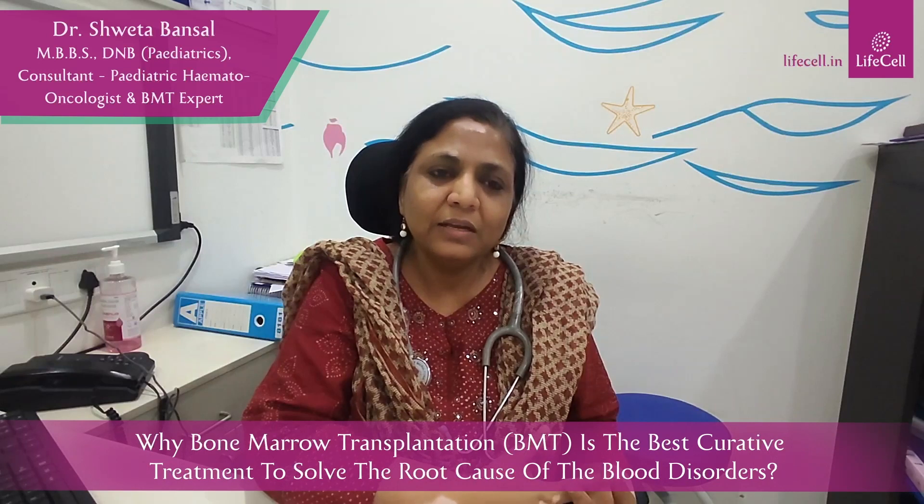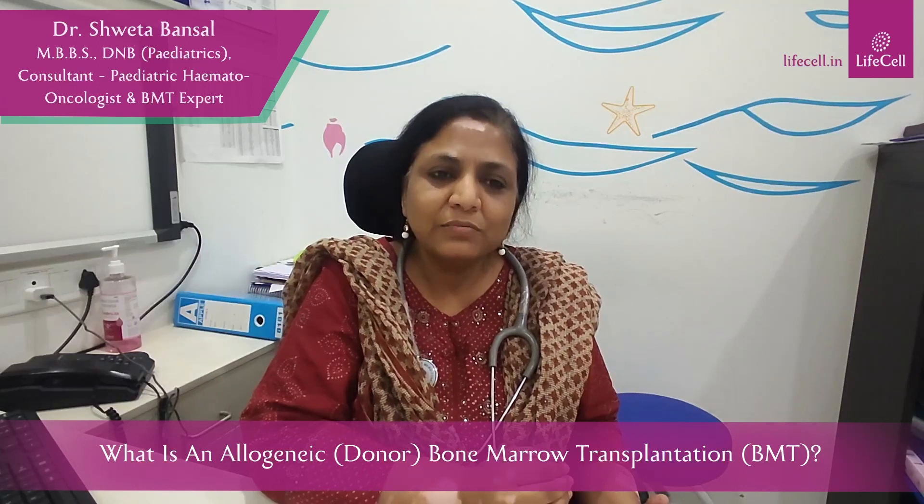There are two types of bone marrow transplants: autologous and allogeneic. In autologous transplant, we take out bone marrow cells from the patient's own body and infuse them — but we don't use this for these disorders because the bone marrow is already not healthy. Autologous transplants are used for cancers like Hodgkin's lymphoma or neuroblastoma. For blood disorders, we do an allogeneic transplant, meaning we take bone marrow cells from a person of the same species but somebody else, not self.